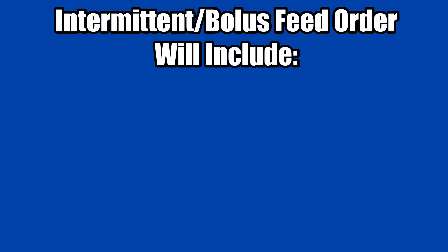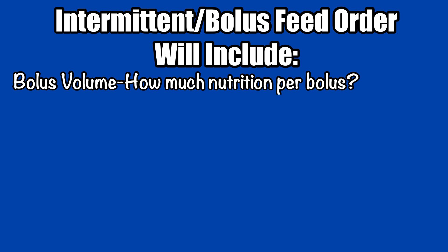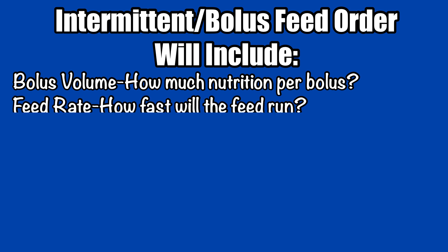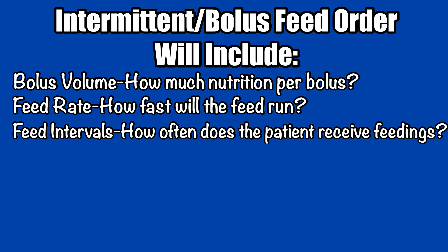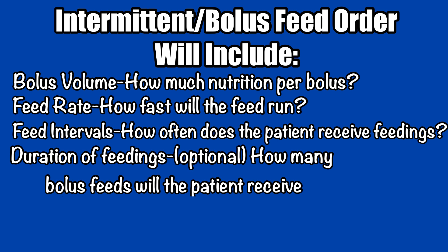Now look at your orders for feeding in EPIC. If the patient has bolus feedings, the order will indicate this and include a few vital pieces of information. You should have a bolus volume — how much nutrition does the patient receive with each feed? A feed rate — how fast will the nutrition run? Feed intervals — how often does the patient receive feedings? And potentially the duration of feedings — how many feedings is the patient to receive? This may not be included in your order unless the patient has an end time order for feedings, and then you may need to do some quick calculations to figure out how many are left.